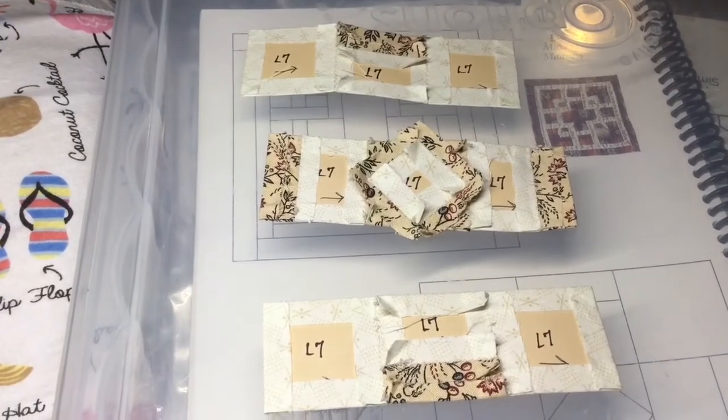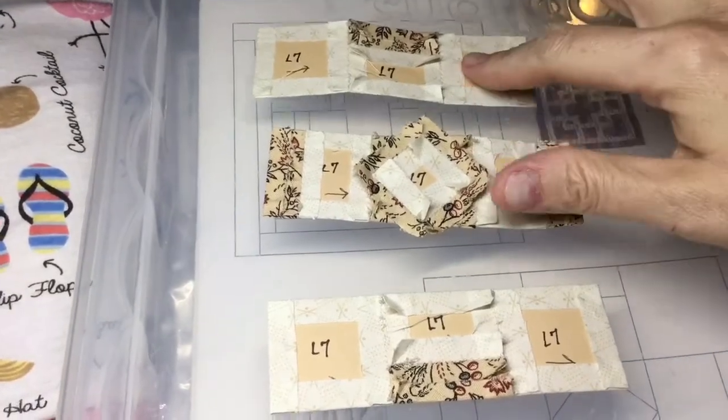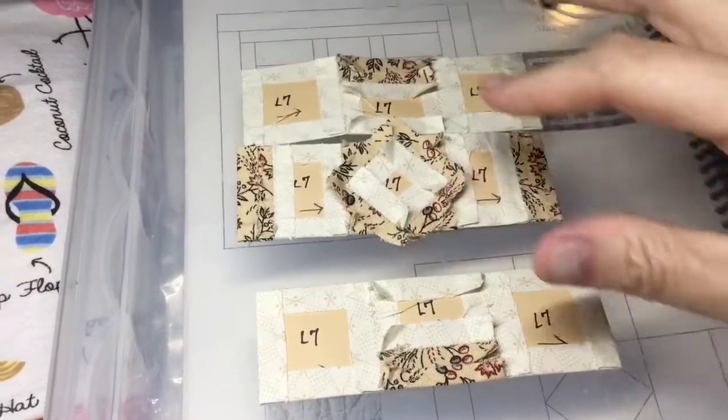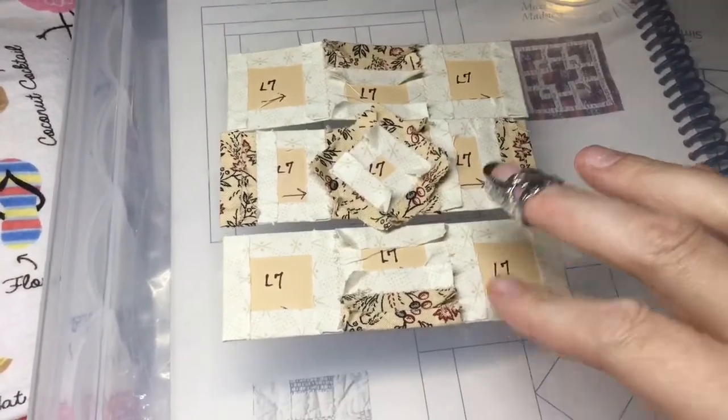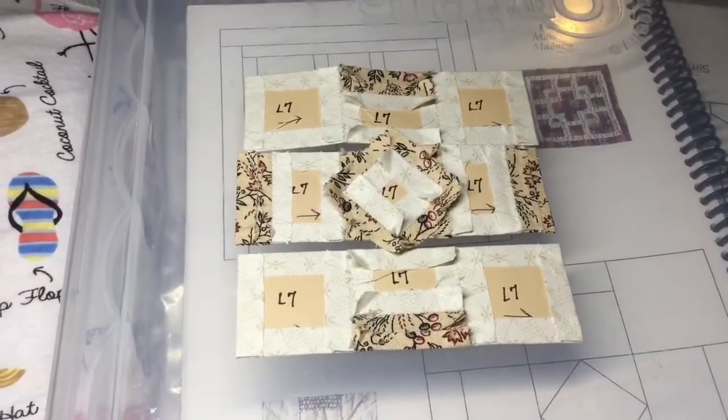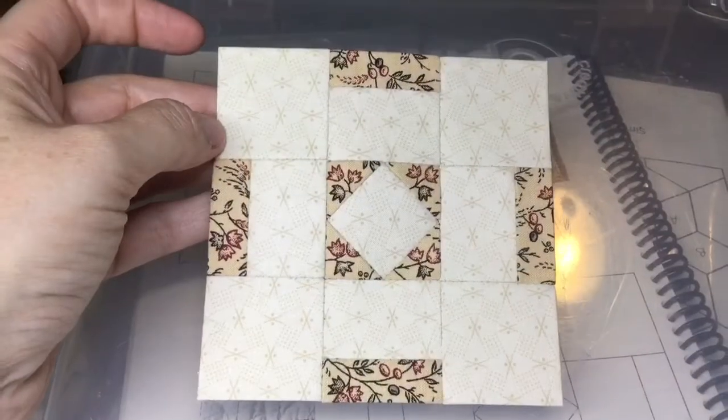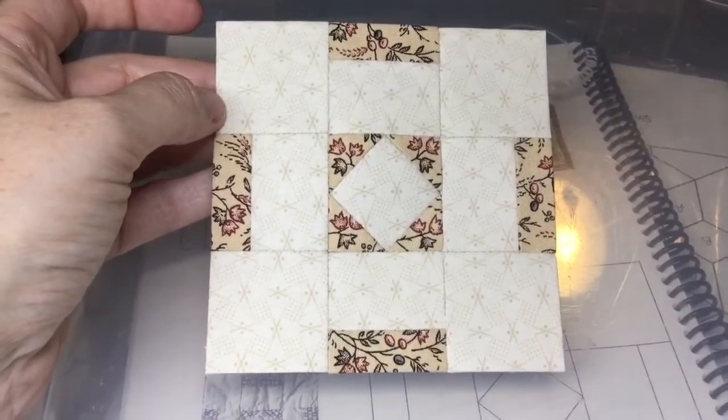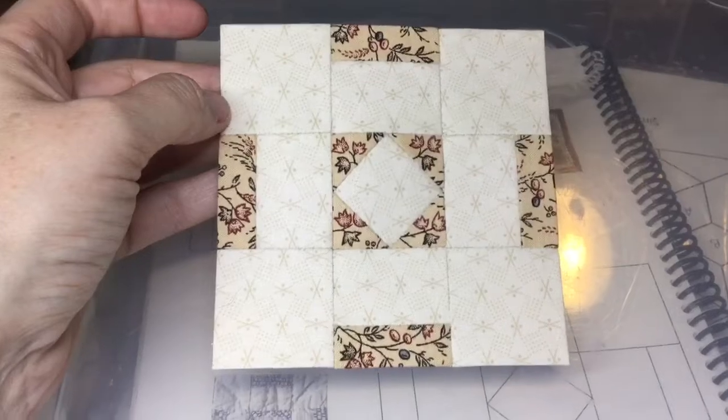I've got my top row completed, so I will connect both the upper and lower rows to the center, and my block will be done. Now that I've assembled all three rows, I have a completed L7 block.